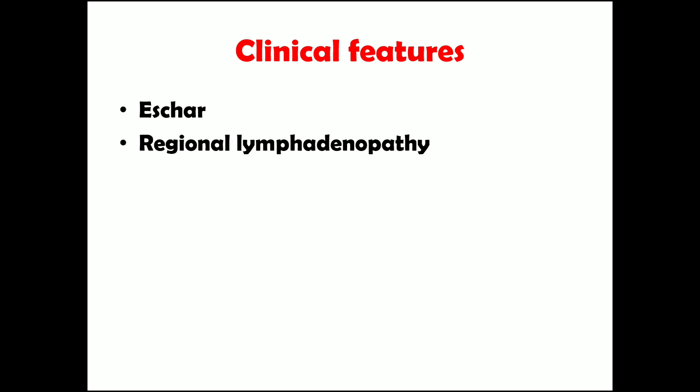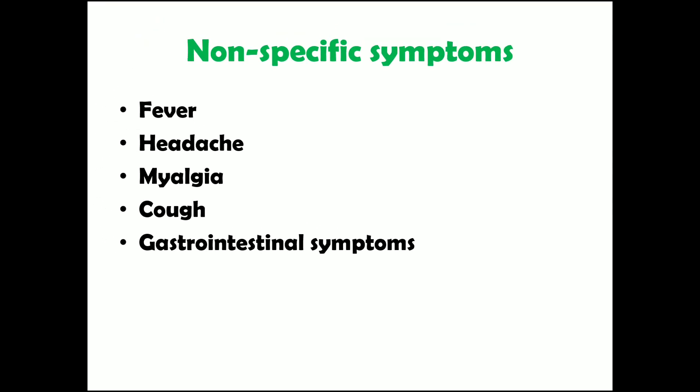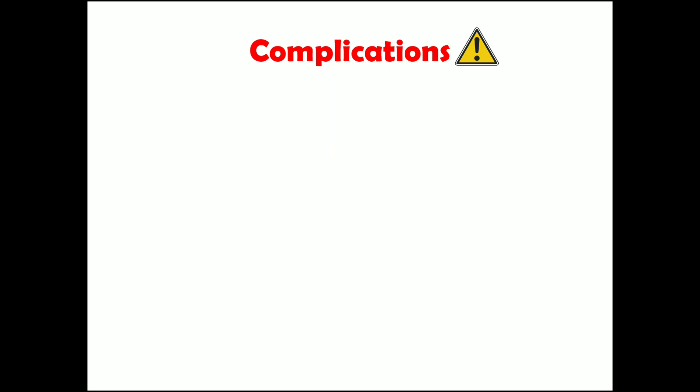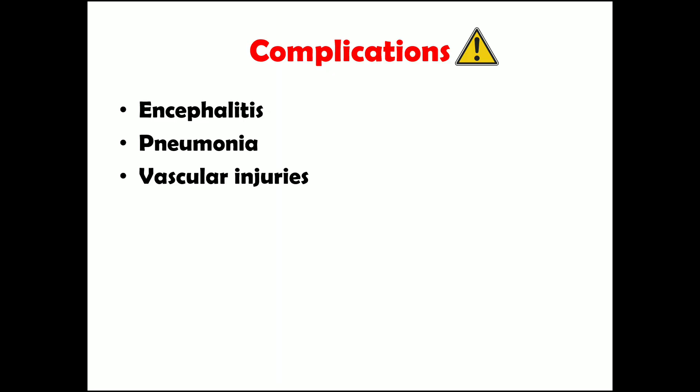The classic triad of scrub typhus is: an eschar, regional lymphadenopathy, and maculopapular rash, present in about 40–50% of cases. Non-specific symptoms such as fever, headache, myalgia, cough, and gastrointestinal symptoms are present in most patients but don't suggest a specific diagnosis. Complications include encephalitis, pneumonia, and various vascular injuries, since the bacteria mainly targets the vascular endothelium.